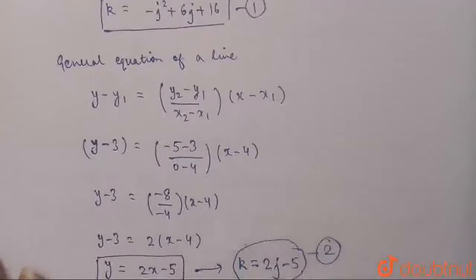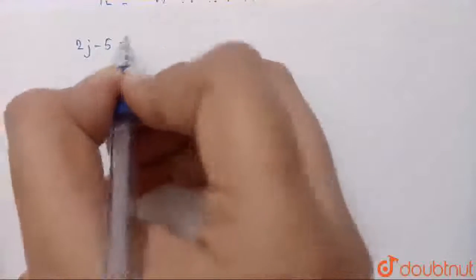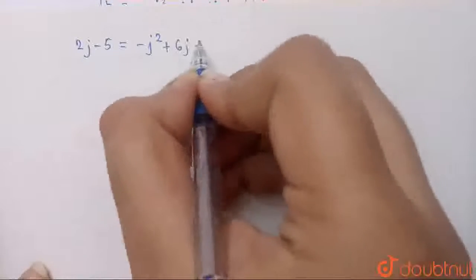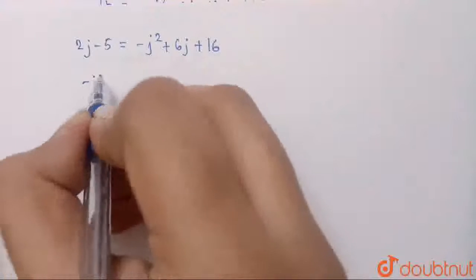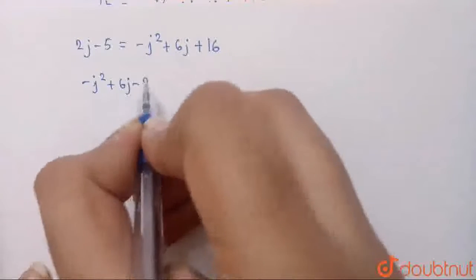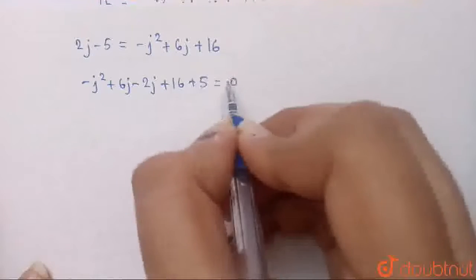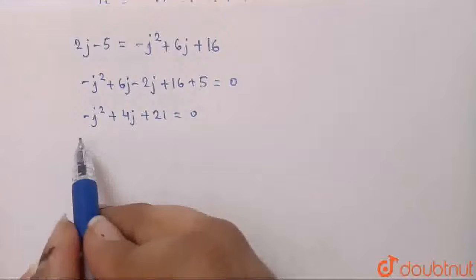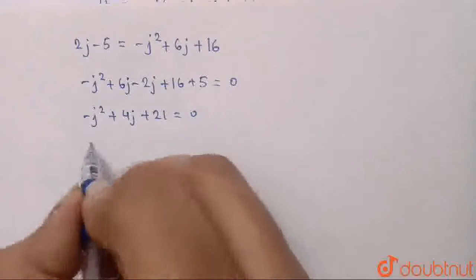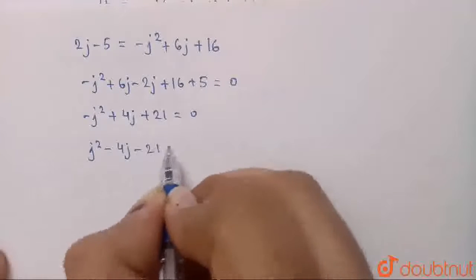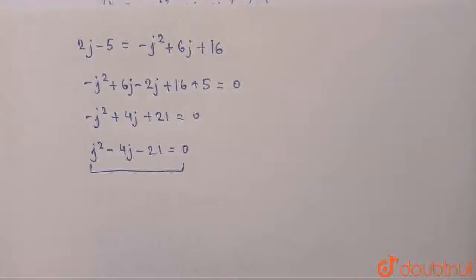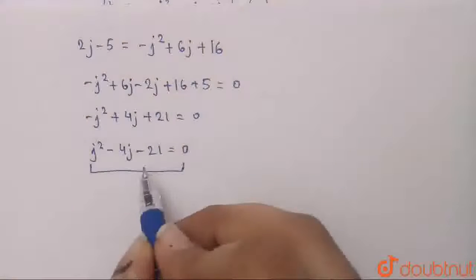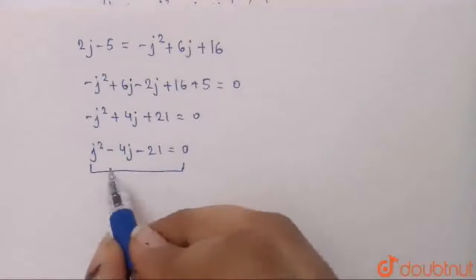Now solving equations 1 and 2, we equate them: 2j - 5 = -j² + 6j + 16. Rearranging, we get -j² + 6j - 2j + 16 + 5 = 0, which becomes -j² + 4j + 21 = 0. Multiplying both sides by -1 gives j² - 4j - 21 = 0. This is a quadratic equation which we will solve by middle term split.